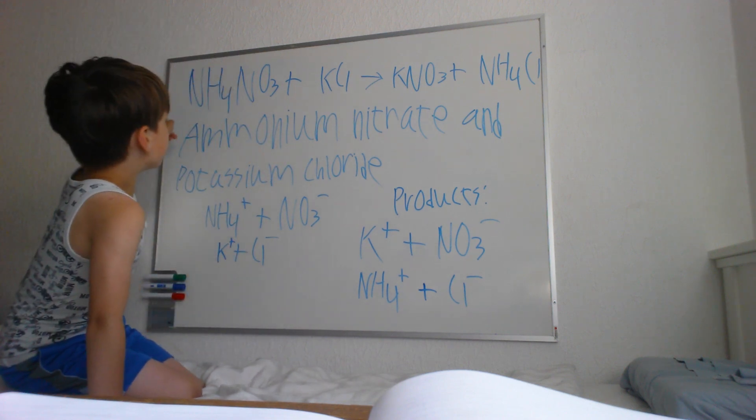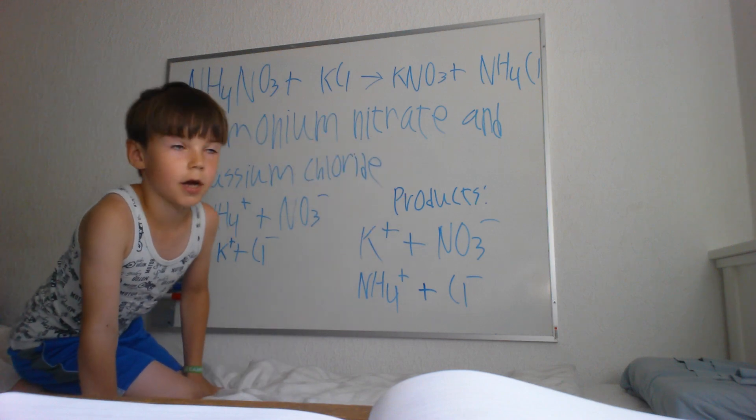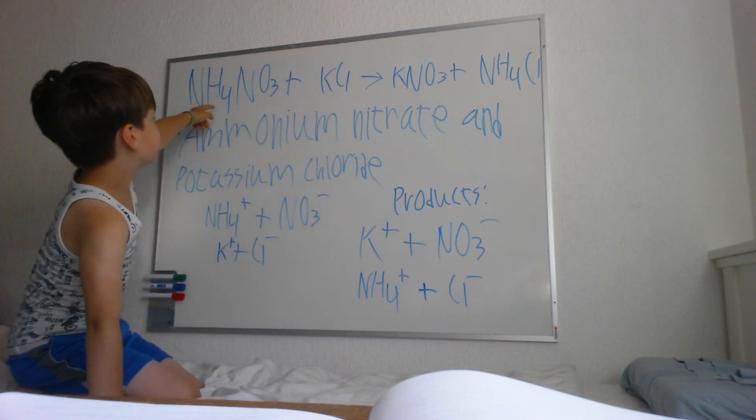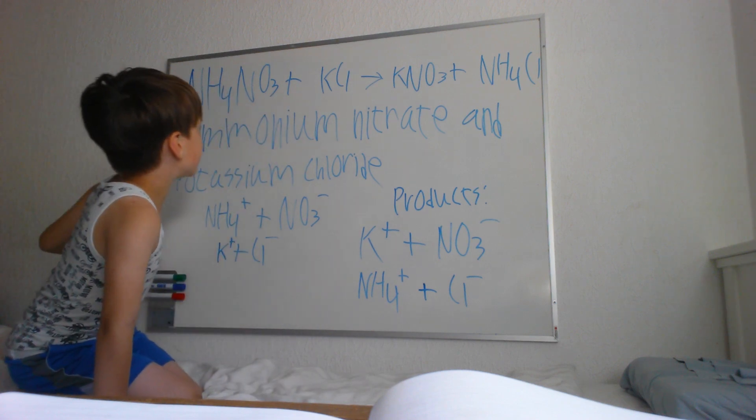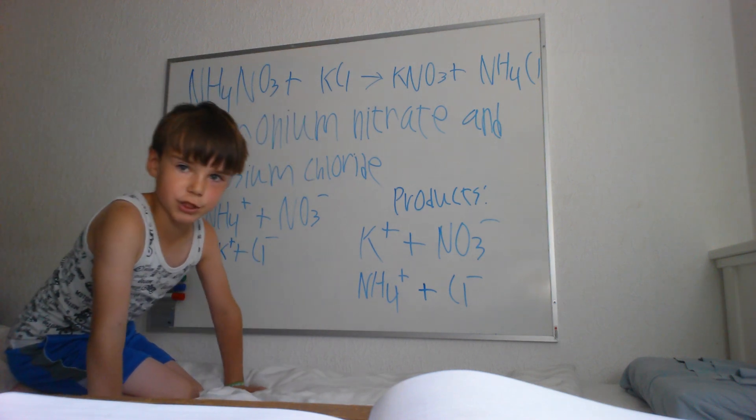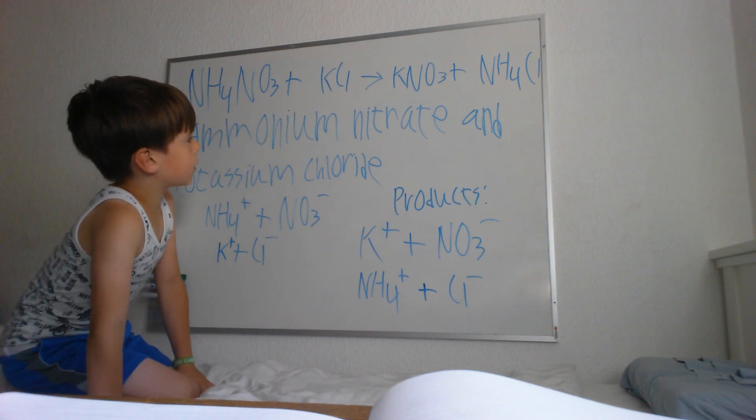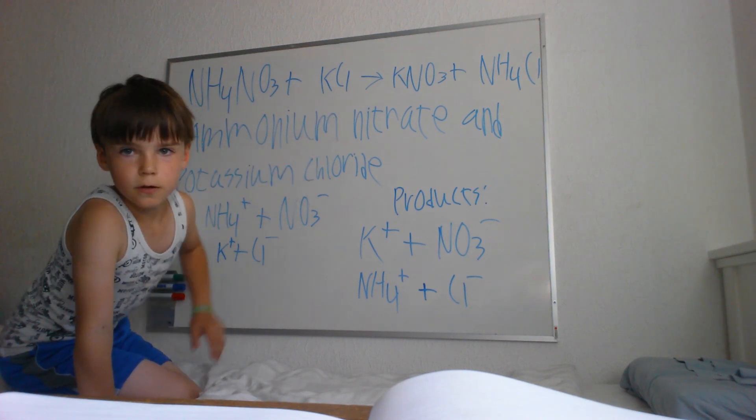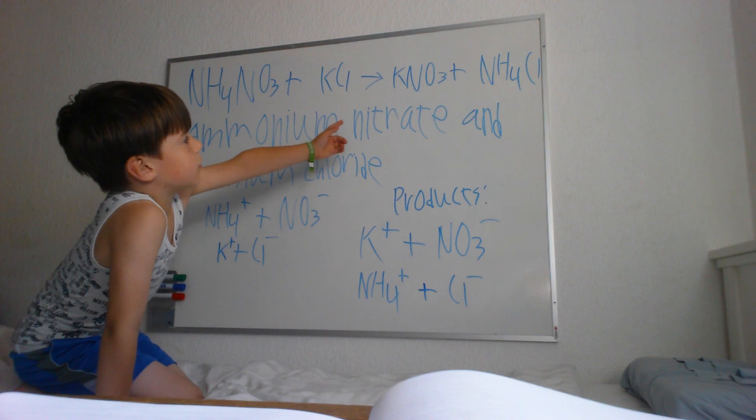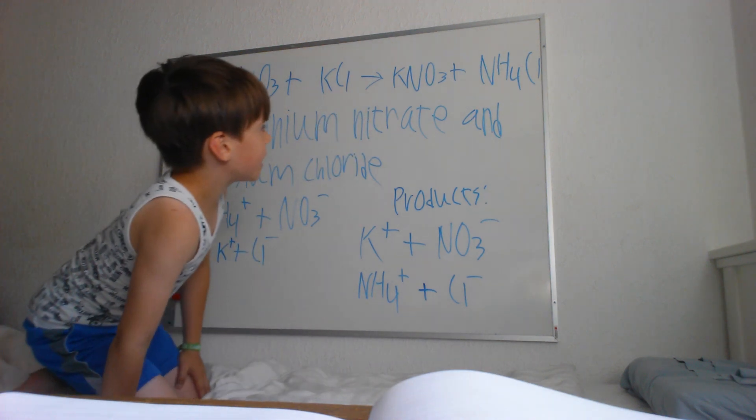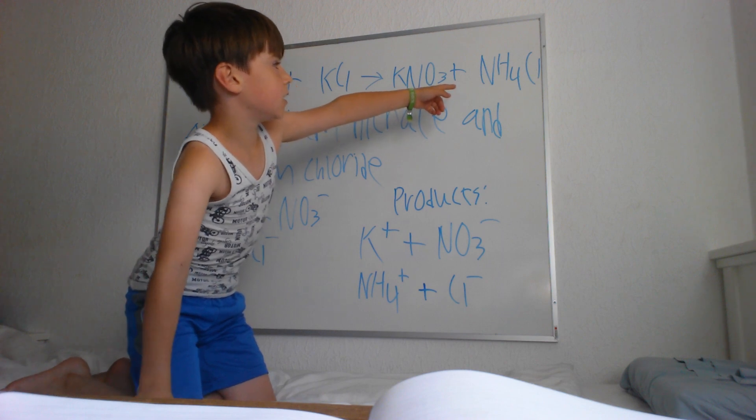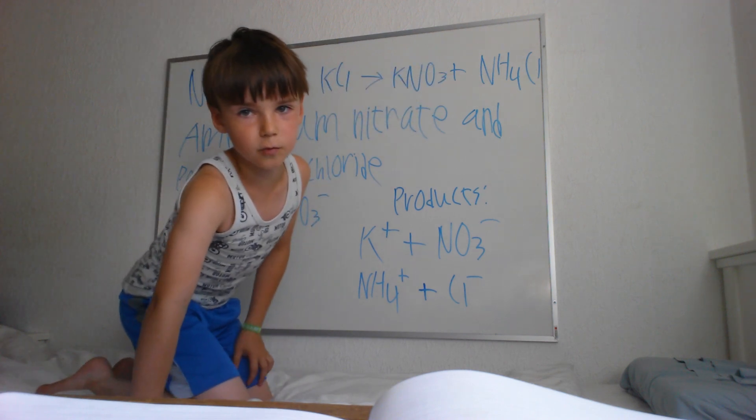I also have the chemical equation up here: NH4NO3, which is ammonium nitrate, plus KCl, which is potassium chloride, equals KNO3, which is potassium nitrate, plus NH4Cl, which is ammonium chloride.